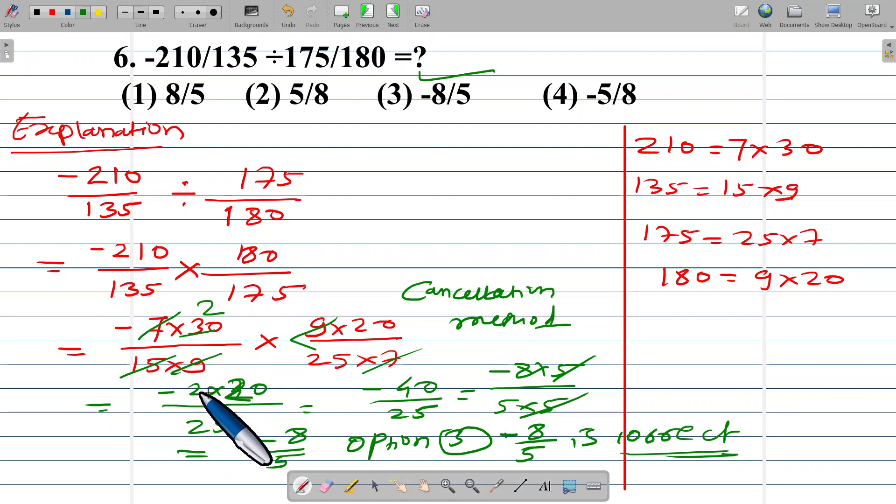Numerator is negative 2 into 20 and denominator is 25. Negative 40 means negative 8 into 5 and 25 means 5 into 5. 5 gets cancelled, answer means negative 8 upon 5. Option number 3 negative 8 upon 5 is correct answer.